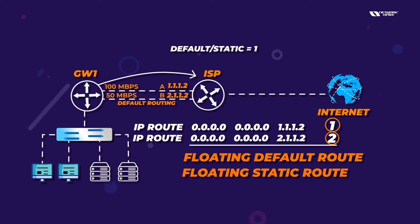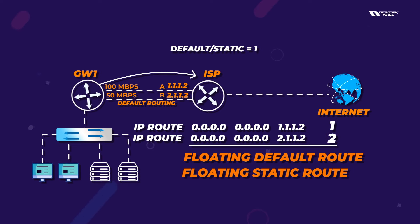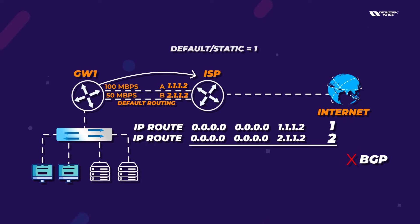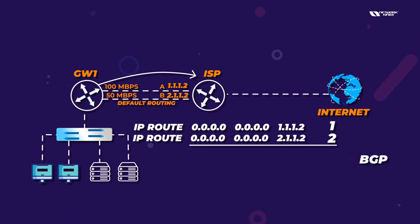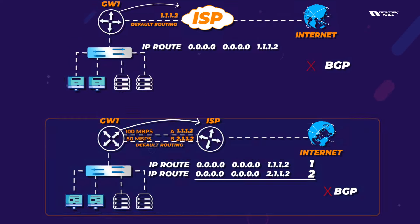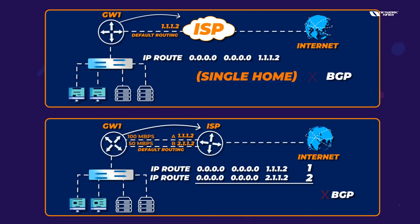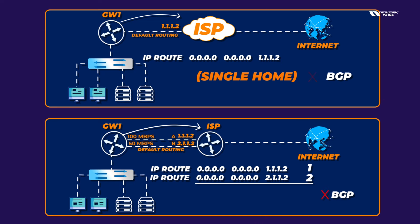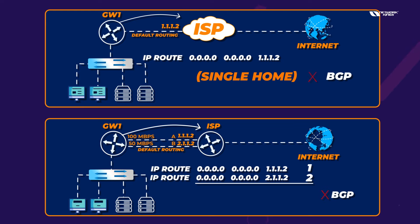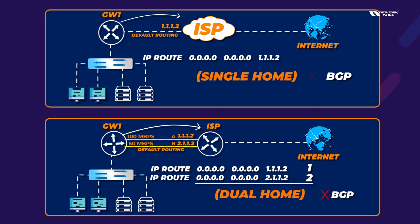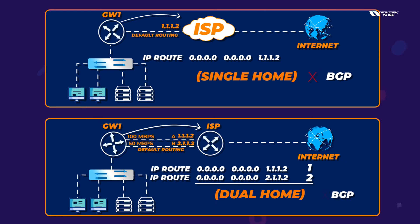These are called floating static routes when you change the AD value. So in both scenarios — one ISP with one connection (single-home) and one ISP with two connections (dual-home) — BGP is not required.